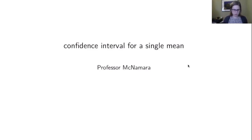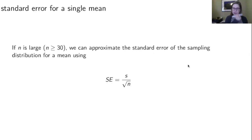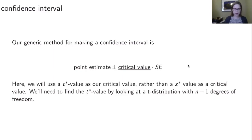This is the video for 6.2ci about the confidence interval for a single mean. Like we saw in the previous video, the way that we can approximate the standard error of the sampling distribution for a mean is with s over the square root of n. That only works if n is large, like greater than or equal to 30. Our generic method for making a confidence interval is to have the point estimate plus or minus the critical value times the standard error.